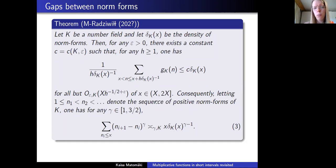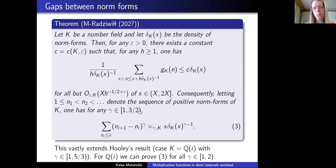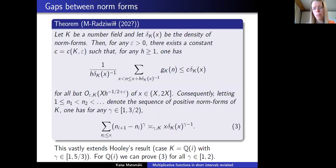If we look at the gamma-th moment of the gaps, we get the asymptotic formula for gamma up to 3/2. Hooley had this for gamma up to 5/3, which is slightly larger than our exponent, but his result worked only for k = Q(i). Our result extends to any number field. In forthcoming work, we are able to handle the Q(i) case for all gamma up to 2 by using specific properties of the Dedekind zeta function of Q(i).